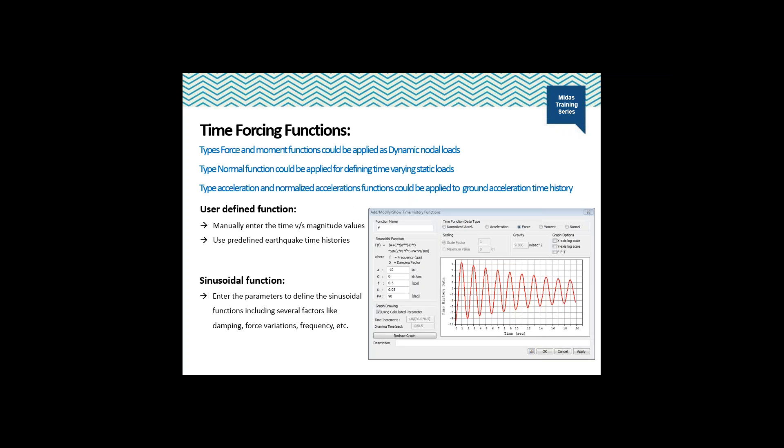The different types of time forcing functions available are: normalized acceleration, acceleration, force, moment, and normal. Force and moment functions can be applied for the dynamic nodal load option. The normal function can be used for defining time-varying static loads. Acceleration and normalized acceleration functions can be applied for ground acceleration time history, i.e., support excitation. Values can either be user-defined manually or use predefined earthquake time histories available in the software.